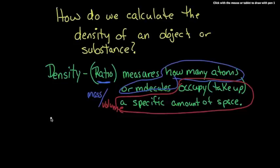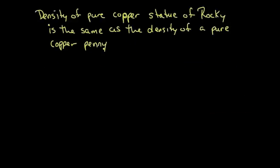The density of any particular substance remains the same because the ratio of mass to volume will remain constant. So the density of a pure copper statue of Rocky is going to be the same as the density of a pure copper penny, even though they're much different in size. It doesn't matter about their overall size, because when you look at the individual piece of copper, you'll find there are just as many molecules packed into that little penny for the amount of space it takes up as there are packed into that huge statue of Rocky. Even though the statue is much more massive and heavier, it takes up more space, whereas the penny is less massive but takes up less space. Overall, the density will remain constant.